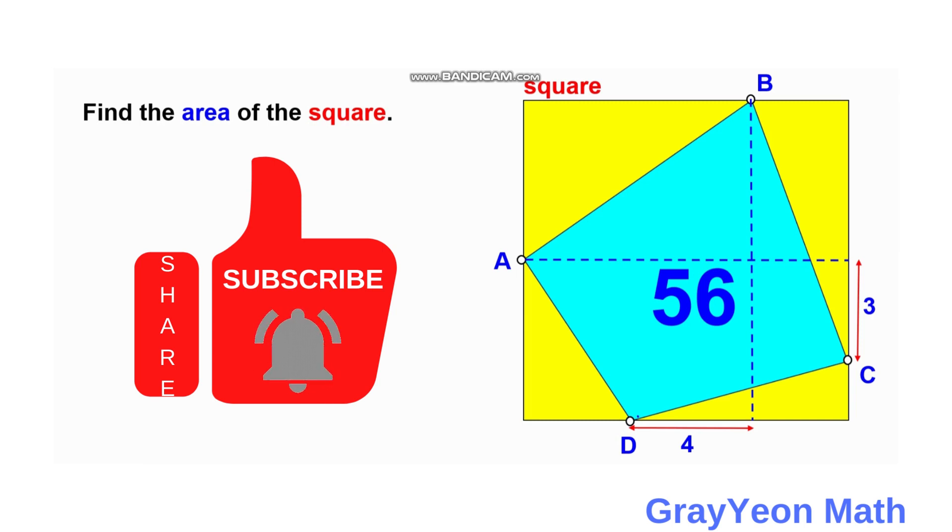It is given that the area of this blue quadrilateral is 56 square units, the horizontal distance from B to D is 4, and the vertical distance from the projected A to C is 3 units. We are required to find the area of the square.